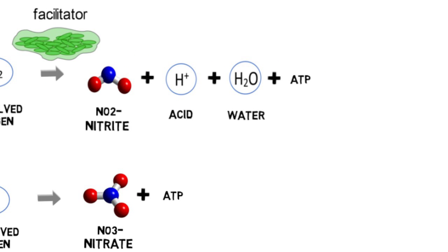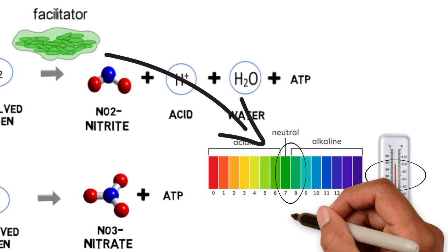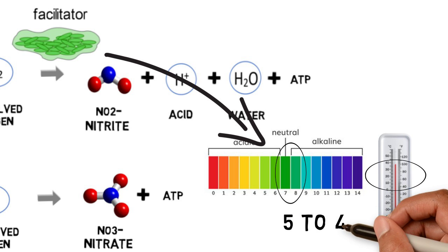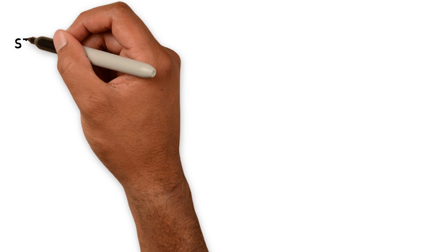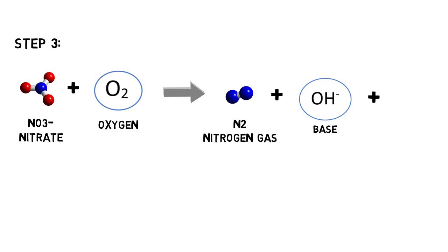Nitrifying bacteria require certain vital conditions such as the right pH value and water temperature. In a final step, nitrate is converted by denitrifying bacteria into nitrogen gas N2, base, and again ATP.